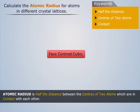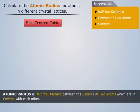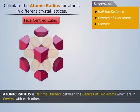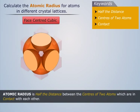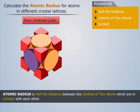Now let's calculate the atomic radius for a face centered cubic lattice. We know that a face centered cubic lattice has eight corner atoms and six atoms at the center of the six faces of the cube. The atom at the center of each face is in contact with the four corner atoms in the same plane.